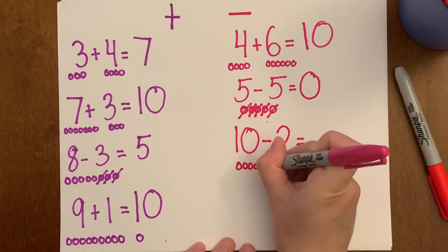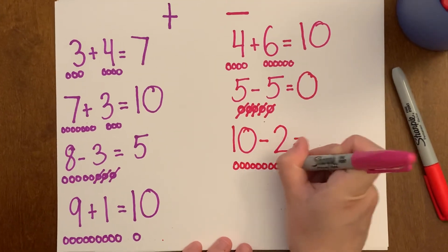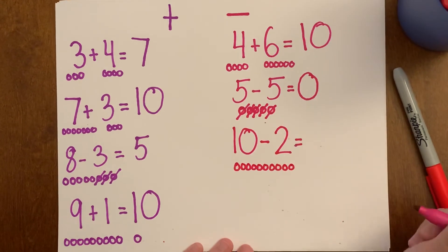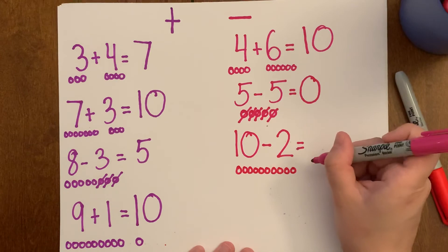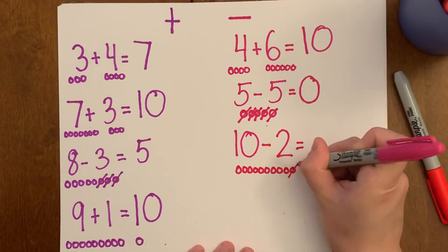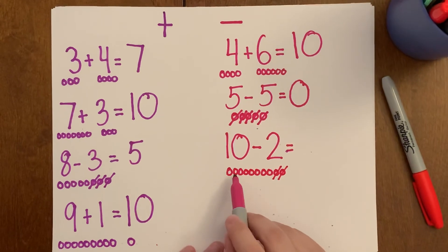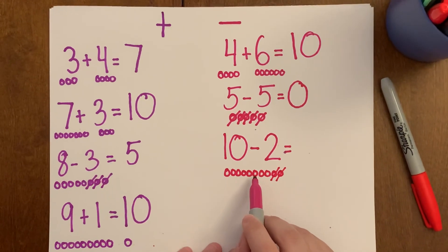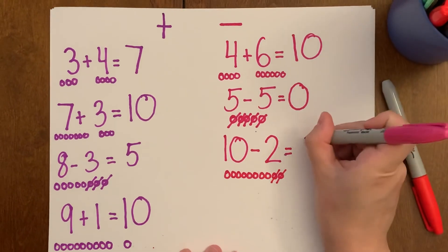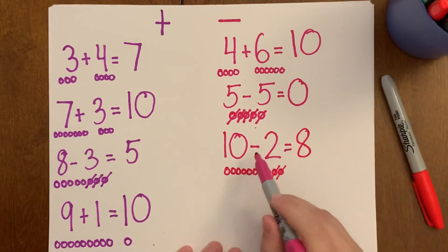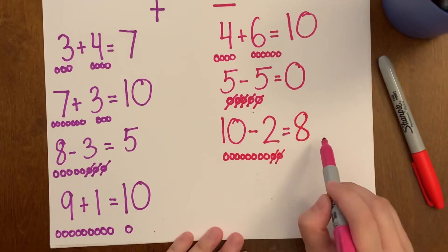One, two, three, four, five, six, seven, eight, nine, ten. I hope you were counting with me. Now I'm going to take two away. One, two. How many circles do I have left? One, two, three, four, five, six, seven, eight. So ten minus two equals eight.